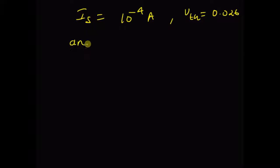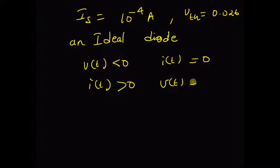Now, for an ideal diode, if the voltage is less than zero, the current I of t is equal to zero. And for I of t, that is, the current greater than zero, the voltage is equal to zero.